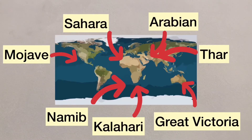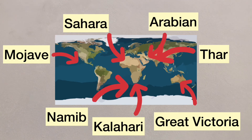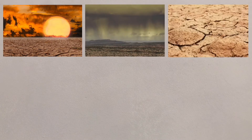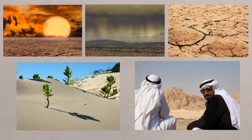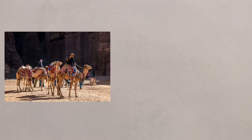There are many hot deserts around the world, and these have particular physical characteristics, not least the heat. As in all ecosystems, the climate, water, soils, plants and people are interdependent, with the plants and animals adapting to their environment. There are opportunities and challenges within the deserts, and you'll normally look at this in relation to a particular case study.